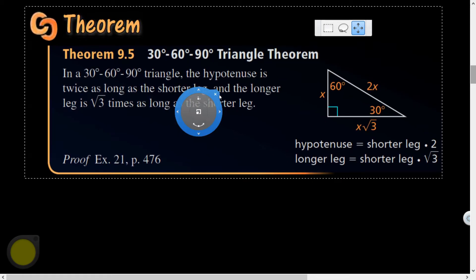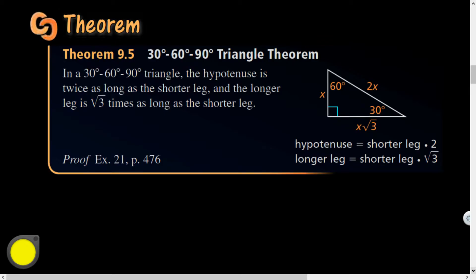It turns out 30-60-90 triangles are also a special right triangle. The reason these occur is because in an equiangular (60-60-60) triangle, if you draw a perpendicular bisector down the middle, you get a 90-degree angle, and the 60-degree angle gets cut in half to become 30. These ratios happen frequently enough that you should know them through calculus and the rest of your life.